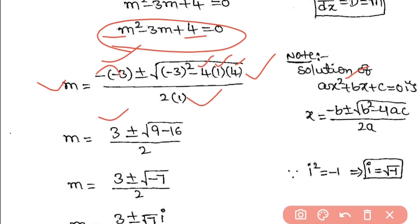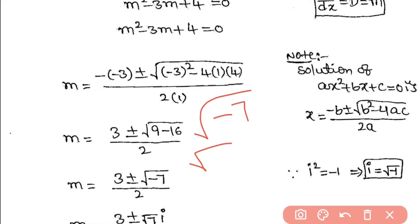So here we get (3 ± √(-7))/2. √(-7) = √7 × √(-1). Since √(-1) = i (from complex numbers, i² = -1).